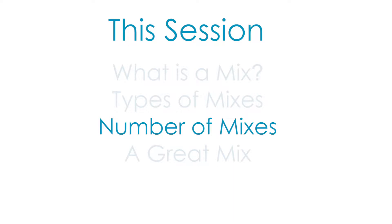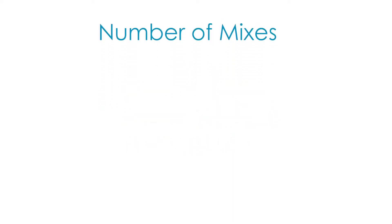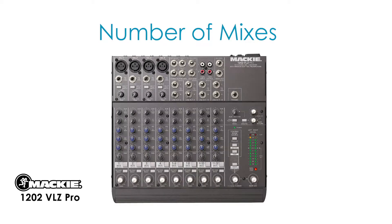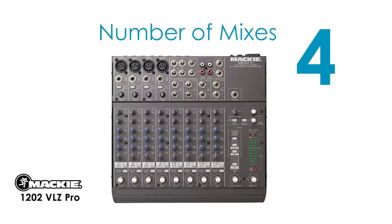In this video, we will learn about the number of mixes found on a few name-brand mixers. Starting with a basic mixer, such as the Mackie 1202 VLZ Pro. This mixer has two auxiliary sends, a single group mix, and a main mix for a total of four mix buses.